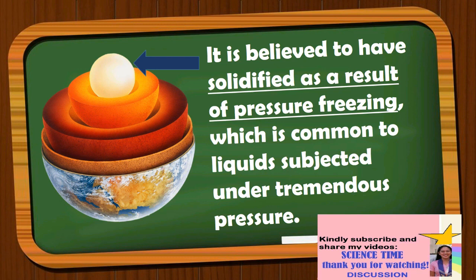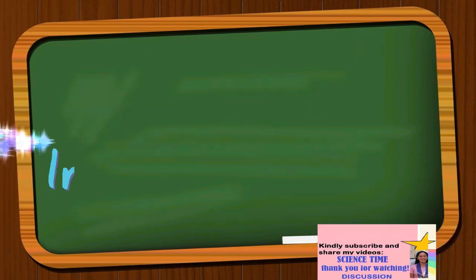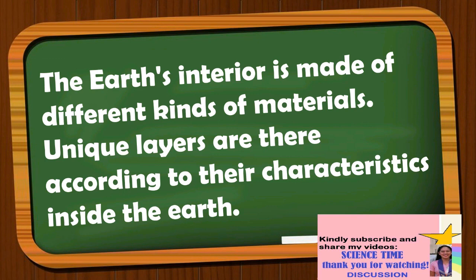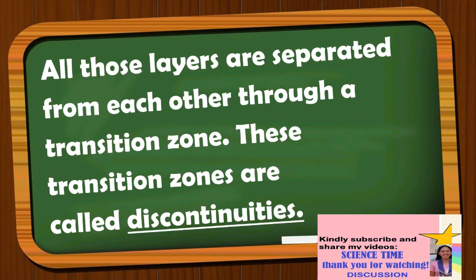The Earth's interior is made up of different kinds of materials forming unique layers according to their characteristics. All those layers are separated from each other through a transition zone. These transition zones are called discontinuities. Here are the following discontinuities inside the Earth.